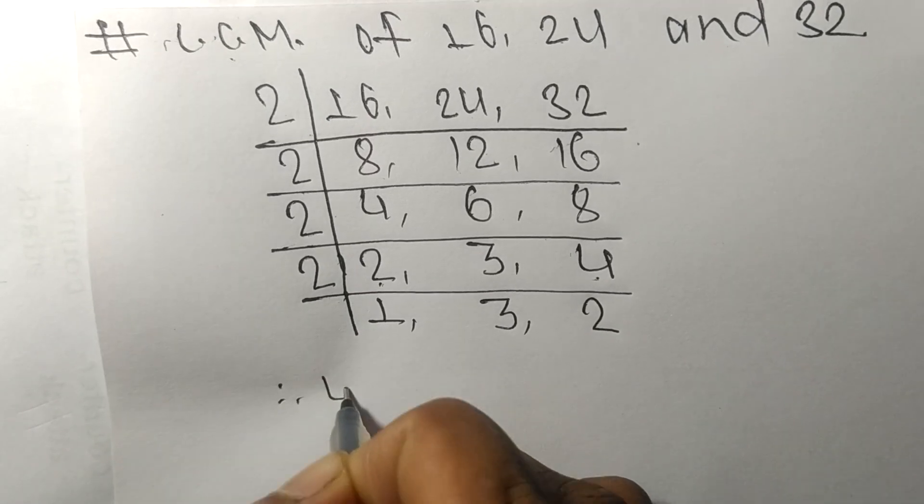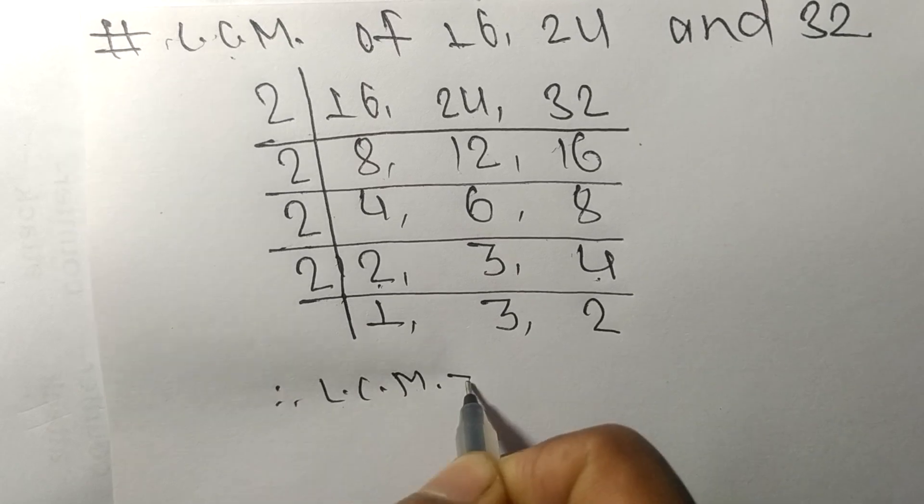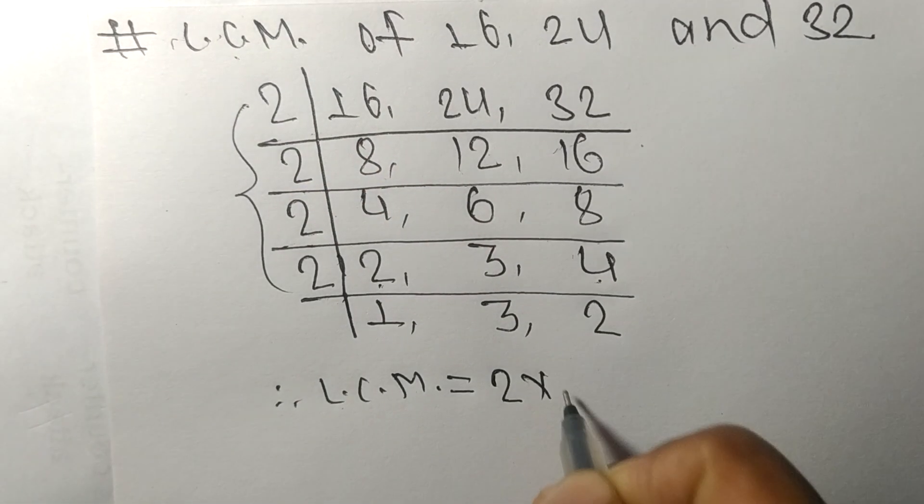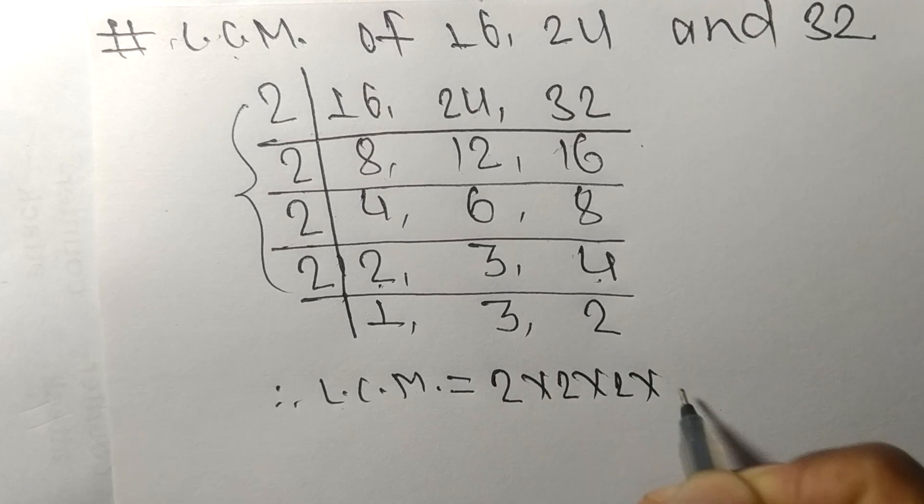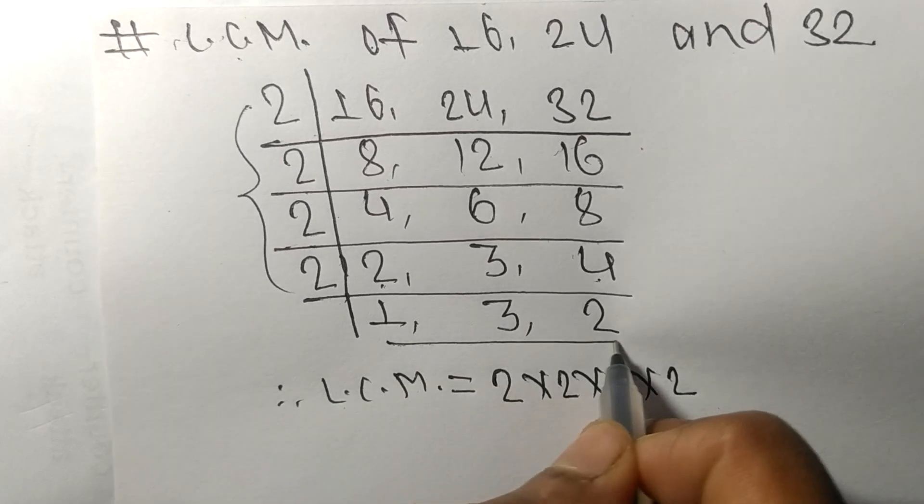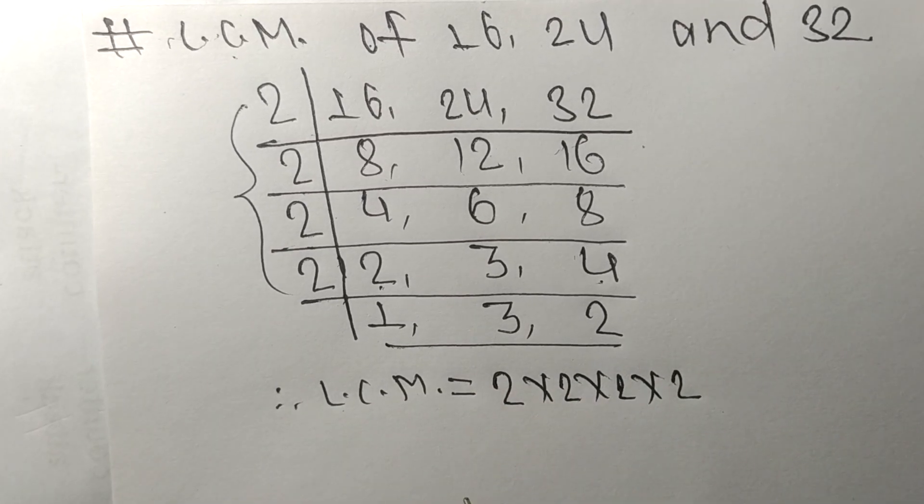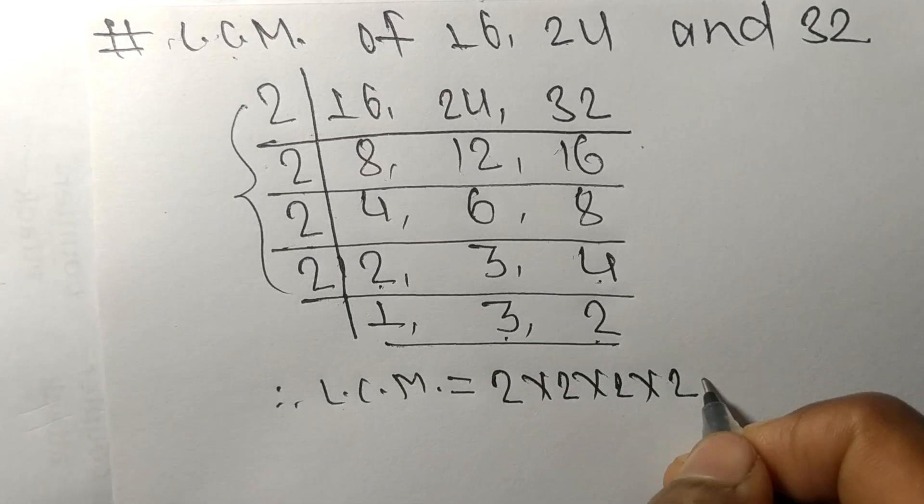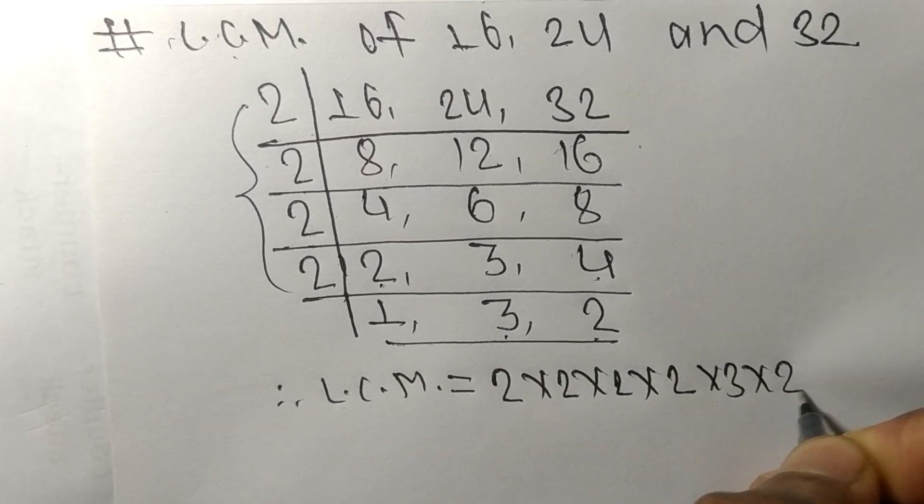Now the LCM is equal to, from this side, 2 times 2 times 2 times 2. From this side, we choose the numbers greater than 1, that is 3 and 2.